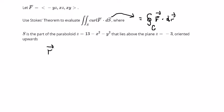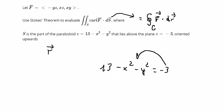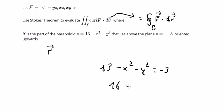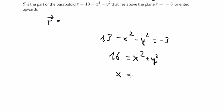The first thing we need to find is vector r. We have z = 13 minus x squared minus y squared, which equals negative 3. We put negative 3 on the left and the rest on the right.